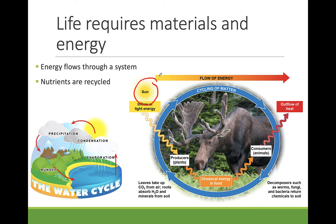Animals eat the plants, and chemical reactions convert the energy from plant materials into other forms of chemical energy, like ATP, that powers the cells. All of the chemical reactions inside of organisms make up their metabolism. Every time a chemical reaction occurs, some energy is lost as heat. Once converted to heat, energy is no longer usable and it exits the system.